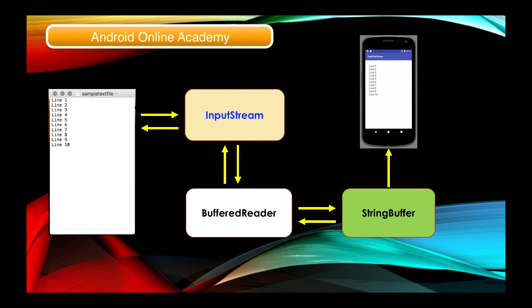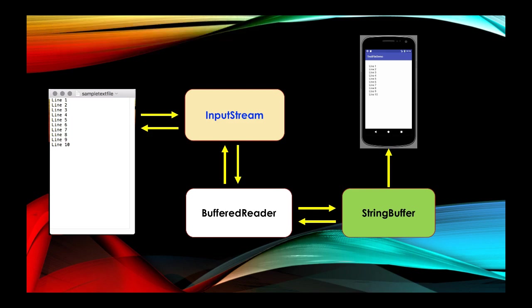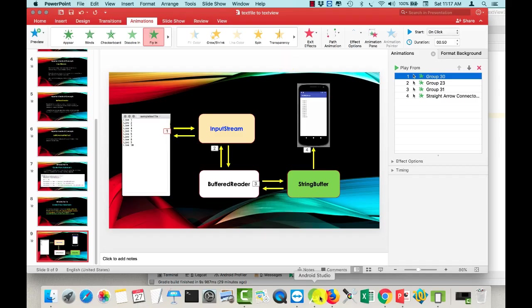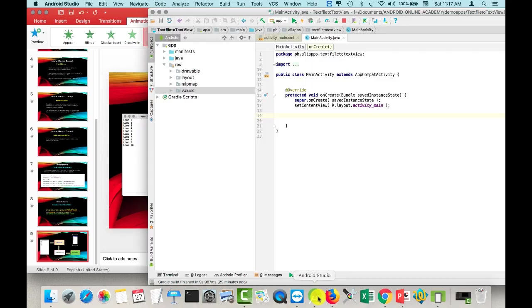So let's proceed to our Android Studio IDE. Just remember this model: we have first the text file, then number two the input stream, the buffered reader, and the string buffer before we go into the text view. Let's proceed with going into our Android Studio.